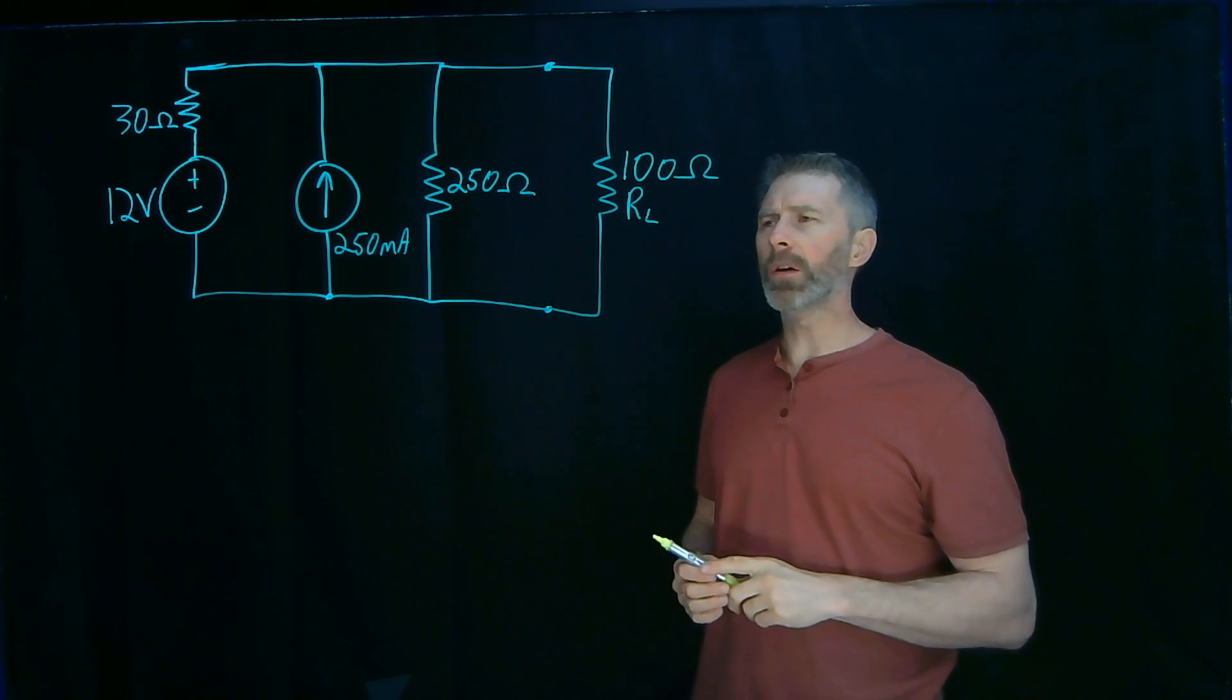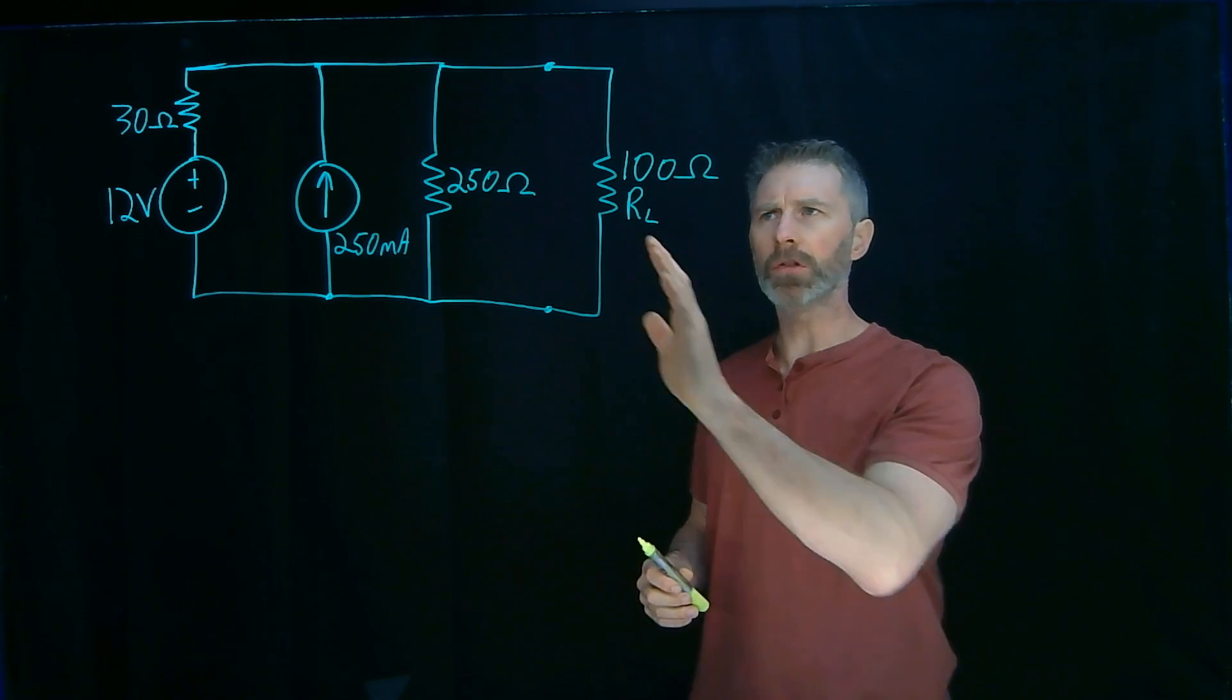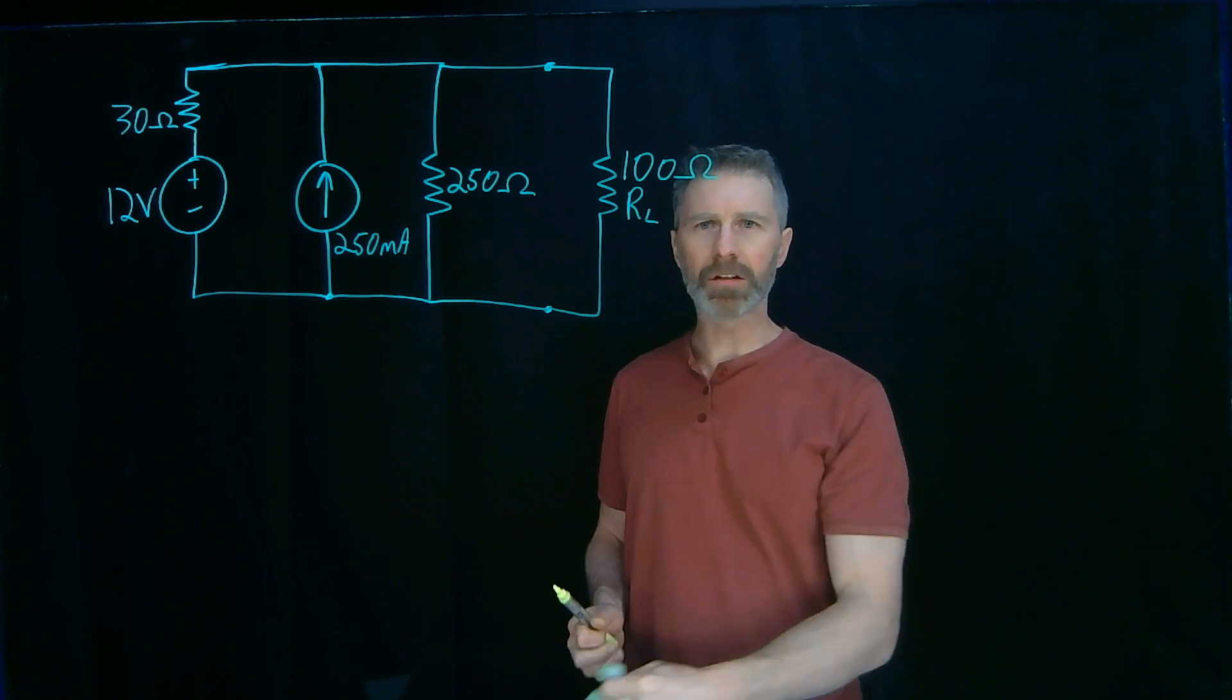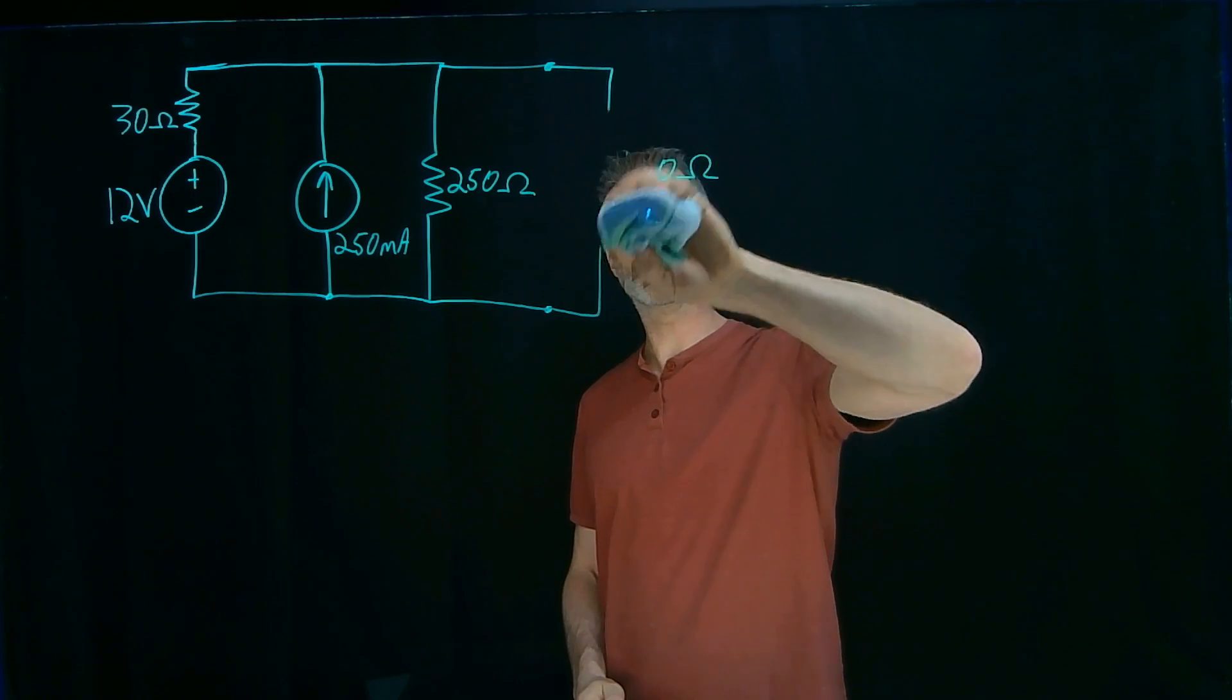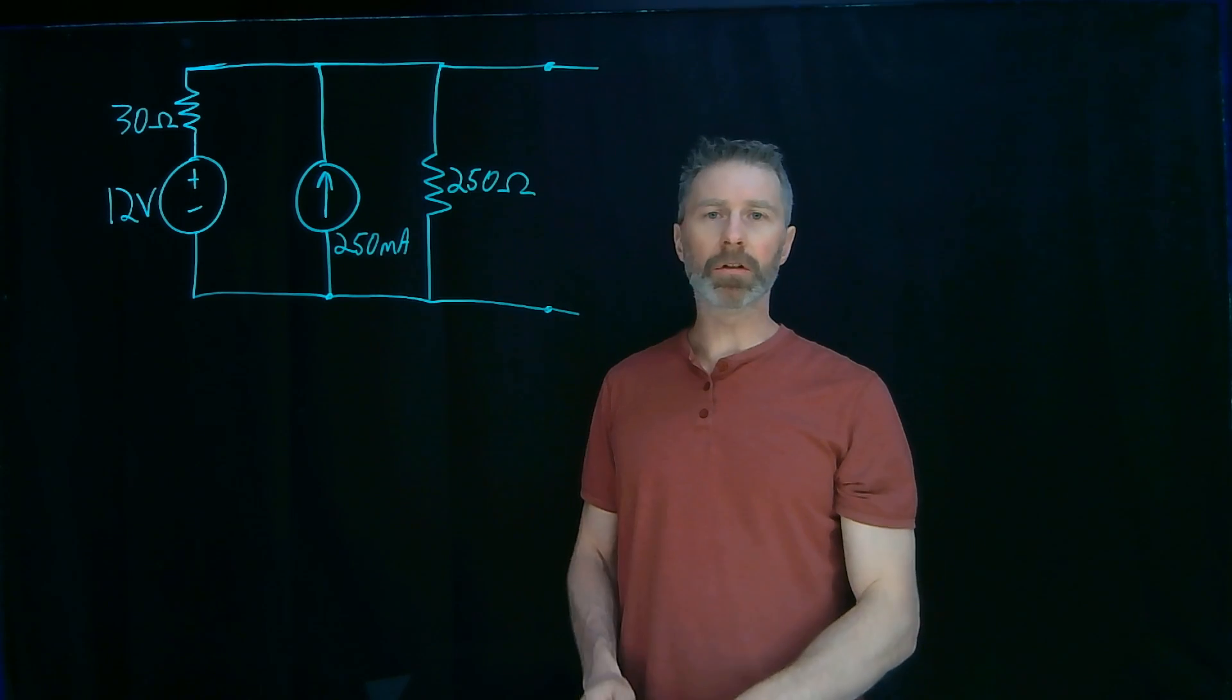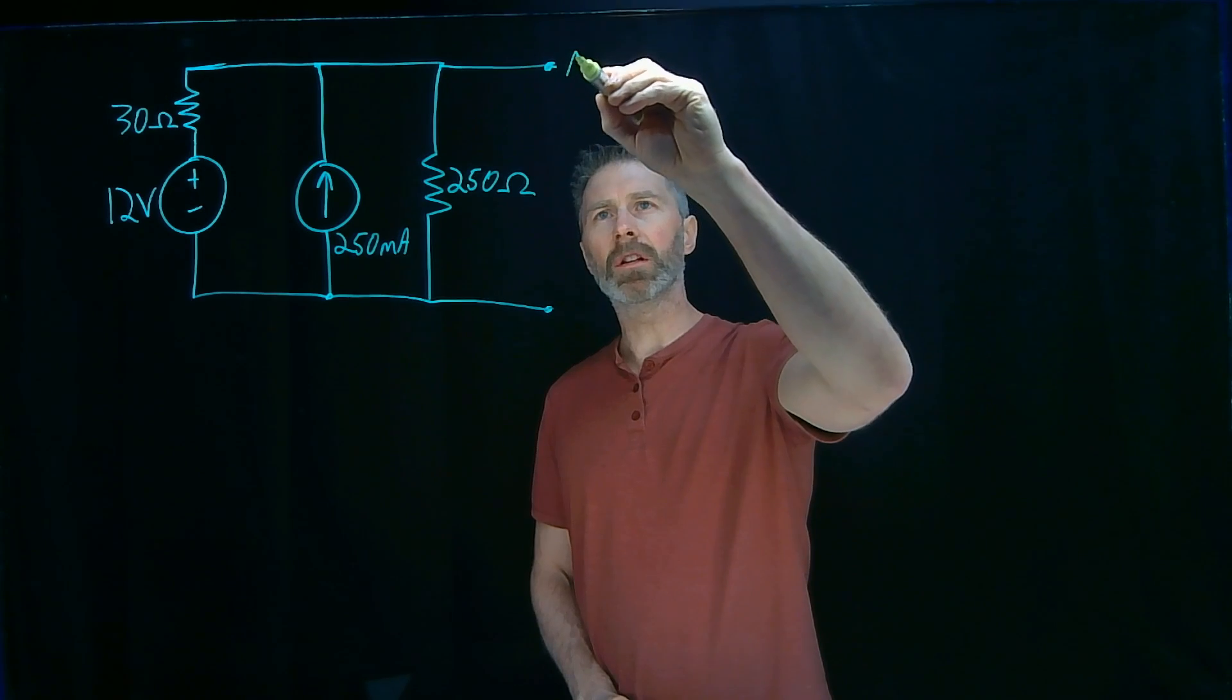Here's the circuit I want to analyze and come up with a Norton equivalent for. This 100 ohm resistor over here is the load, so I want to come up with a Norton equivalent for this half of the circuit. The first step in this Nortonization, if that's even a word, is to remove the load resistor. Identify the part of the circuit I want to convert to the Norton equivalent and remove the load resistor. The second step is to label the load ports.